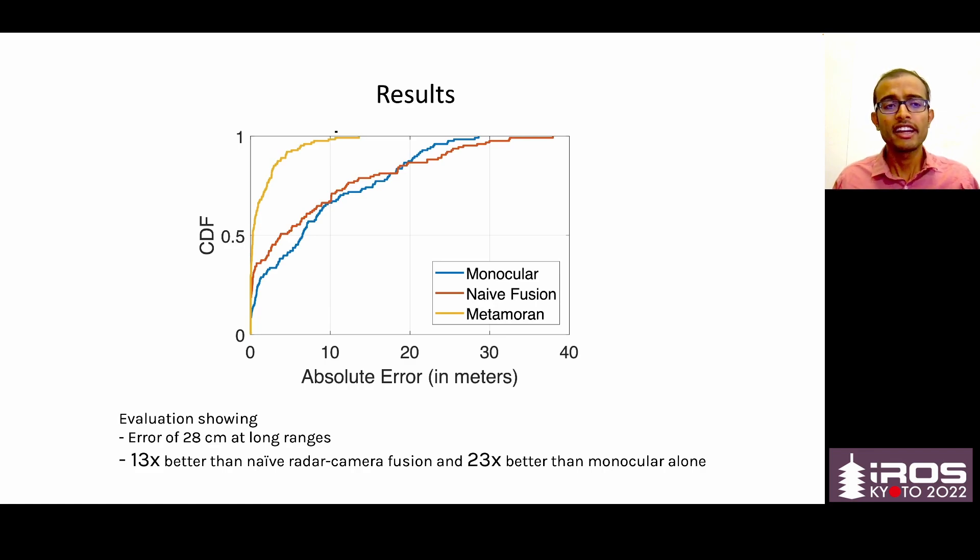We next show our end-to-end system results in contrast to monocular and naive fusion. Clearly, we can see from this CDF that metamoron is superior to monocular and naive fusion. All the data for this was collected at long ranges. We find that the median performance of metamoron is like 28 centimeters at these kinds of ranges, which is 13x better than naive fusion and 23x better than monocular clone.